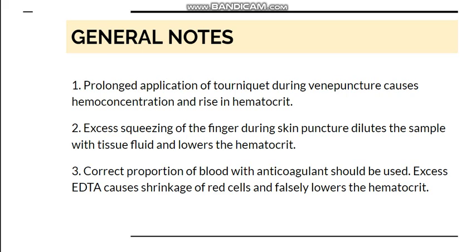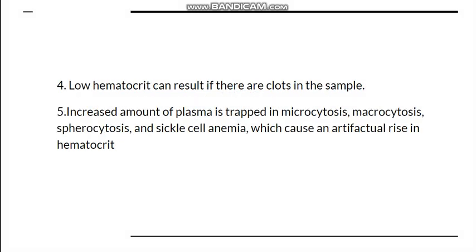Regarding sources of error: prolonged application of a tourniquet during blood collection will increase the hematocrit. Excessive squeezing of the finger during a skin puncture will dilute the sample with tissue fluid, lowering the hematocrit. Also, the blood-to-anticoagulant ratio must be correct — if there is excessive EDTA, it will cause shrinkage of red blood cells, again falsely lowering the hematocrit.